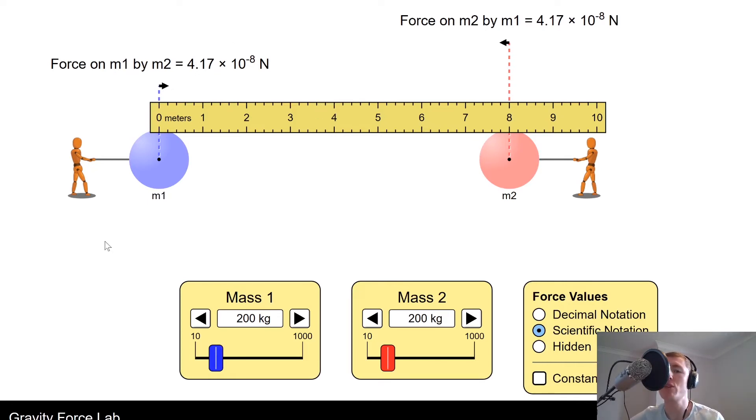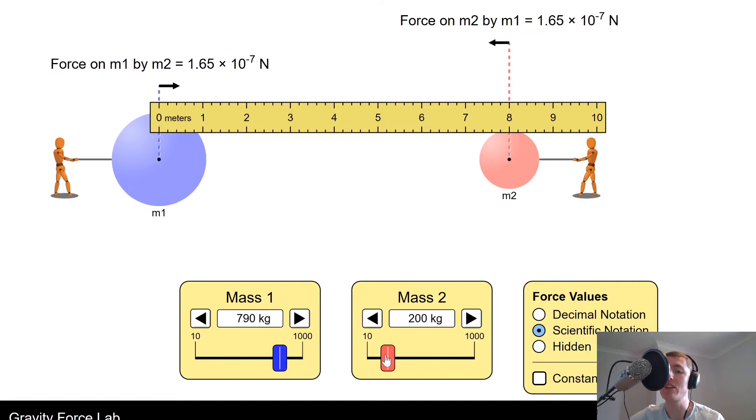Now because our gravitational force of attraction is directly proportional to the masses, if we were to increase either mass value here or both mass values, then we should find that the force values will increase. So if I increase mass m1, you'll see that the gravitational force of attraction has increased. If I increase mass m2, again we get a larger value for the force.